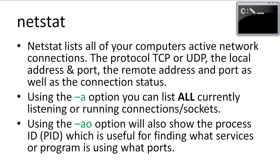Next we have a very useful tool called netstat. Netstat lists all of your computer's active network connections. The command shows us the protocol in use, the local and remote IP addresses and ports, as well as the connection status. Using the -a option lists all currently listening or running connections or sockets, and the -o option also shows the process ID of the program using that connection — very useful for finding suspicious or unnecessary open ports.